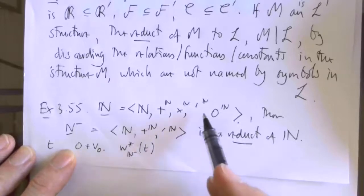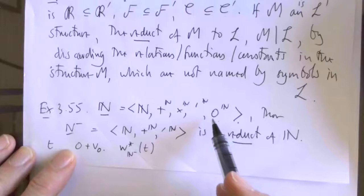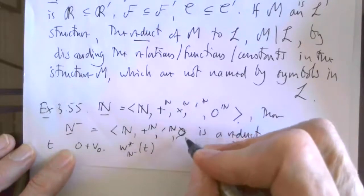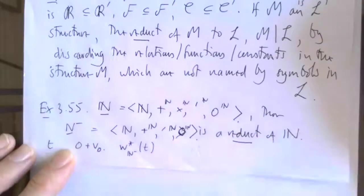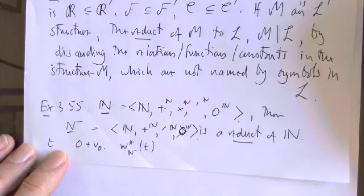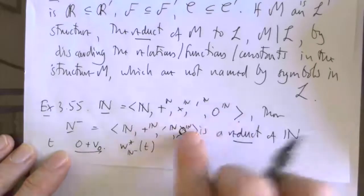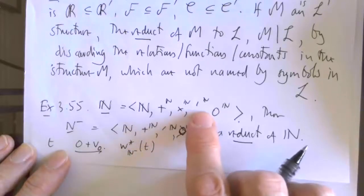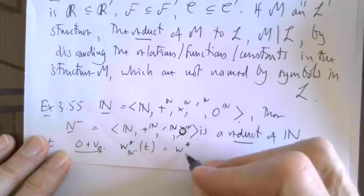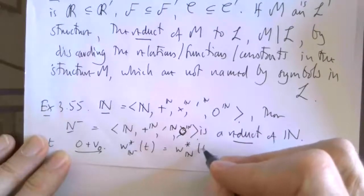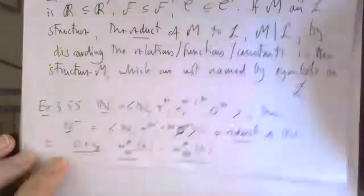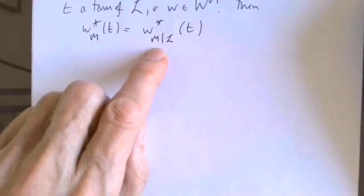The point is the term doesn't mention times or successor. I've talked about 0 here, so let me put 0 back. Because I'm talking about 0 in my term, 0 is in both places and plus is in both places. So the interpretation of the term doesn't depend upon times and successor. That's all the lemma says, and the interpretations will be the same.